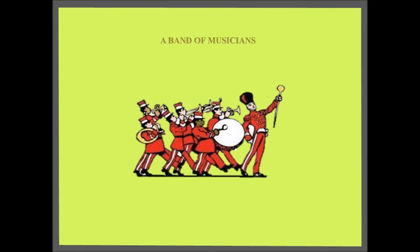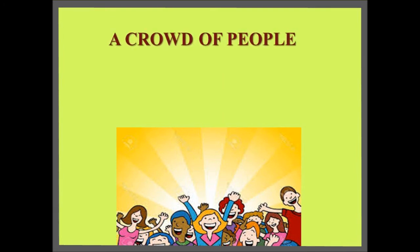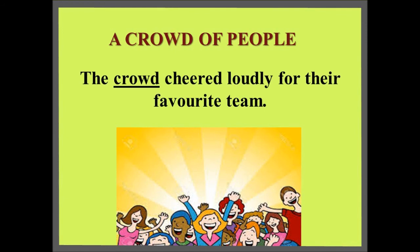A group of musicians is called a band. Sentence: The band of musicians played a lively tune. And do you know what a group of people is called? A crowd. Sentence: The crowd cheered loudly for their favourite team.